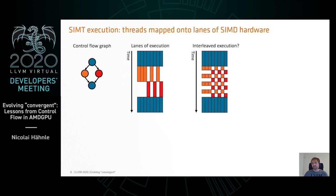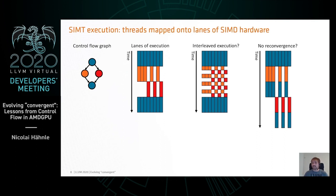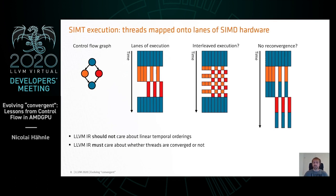There are many ways in which you could do this. You could have interleaved execution — if you have dedicated hardware for it, why not? Maybe you don't reconverge at all at the bottom block. That seems bad for performance, but it's something we need to think about. I think LLVM IR should really not care about the linear or temporal ordering. From the perspective of IR, interleaved or non-interleaved execution should really be the same.